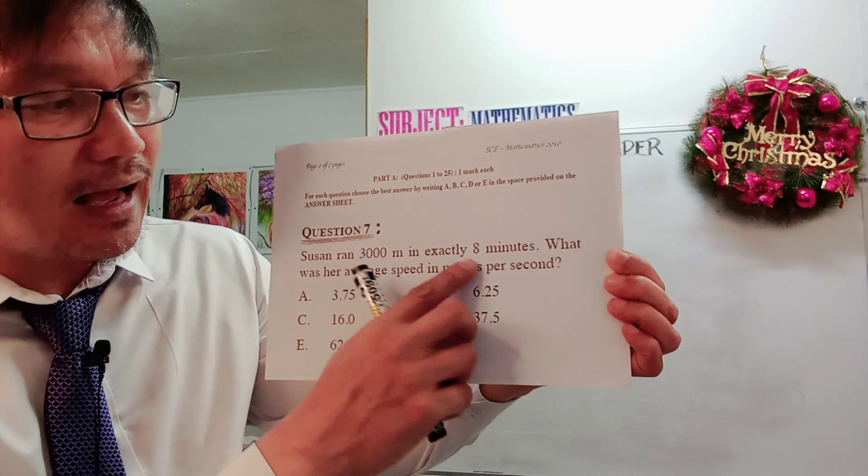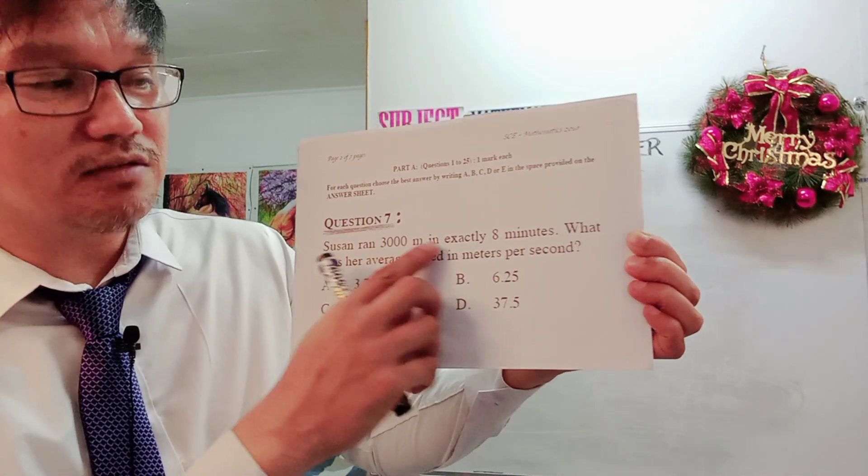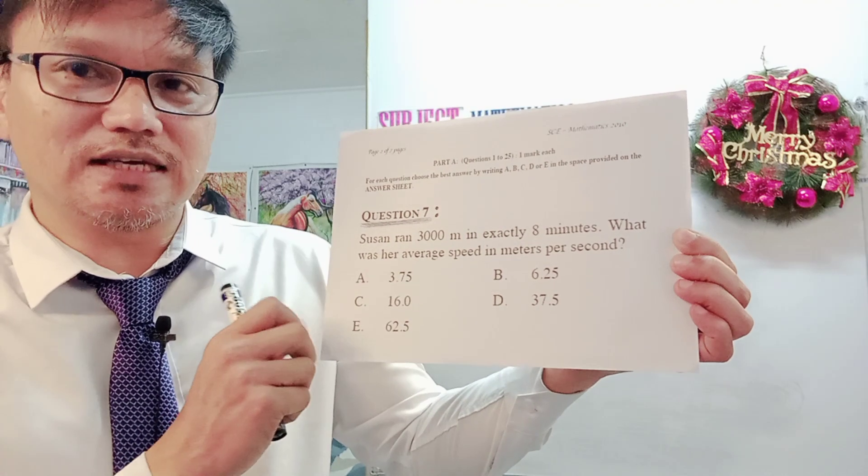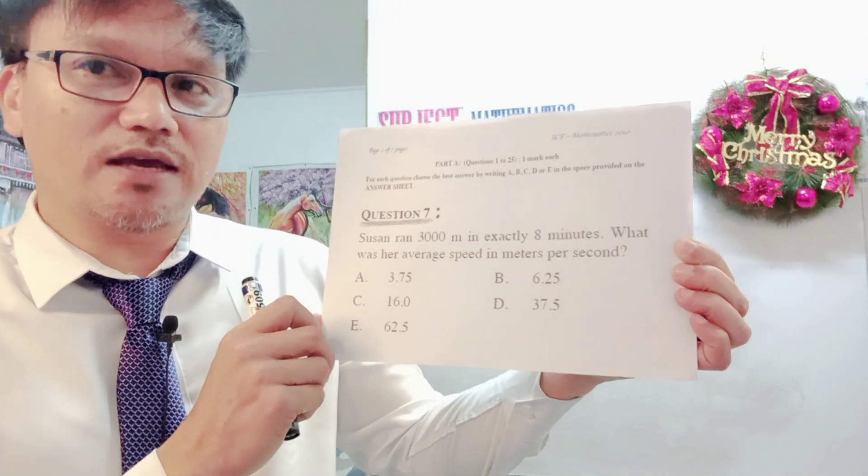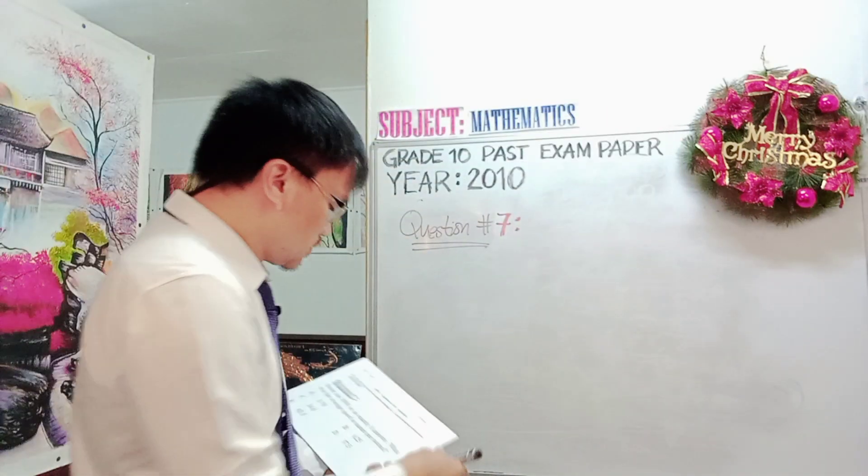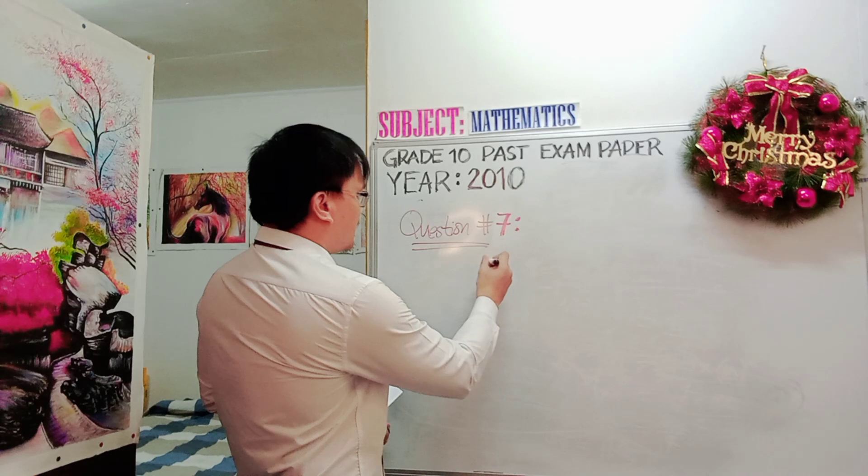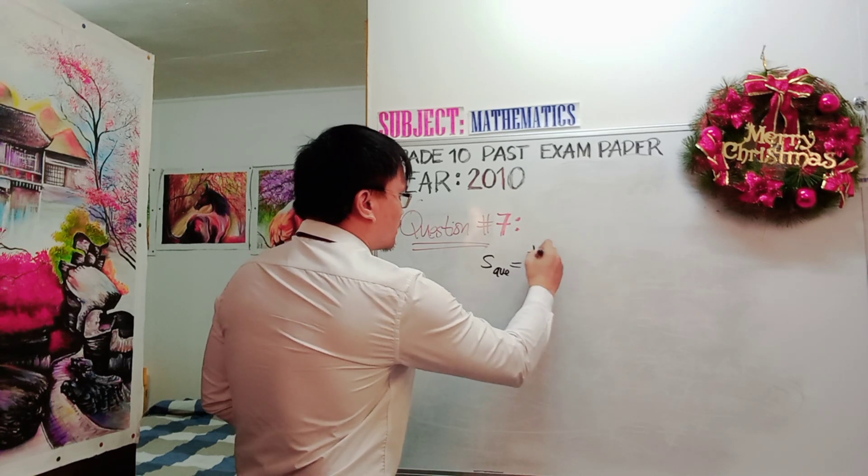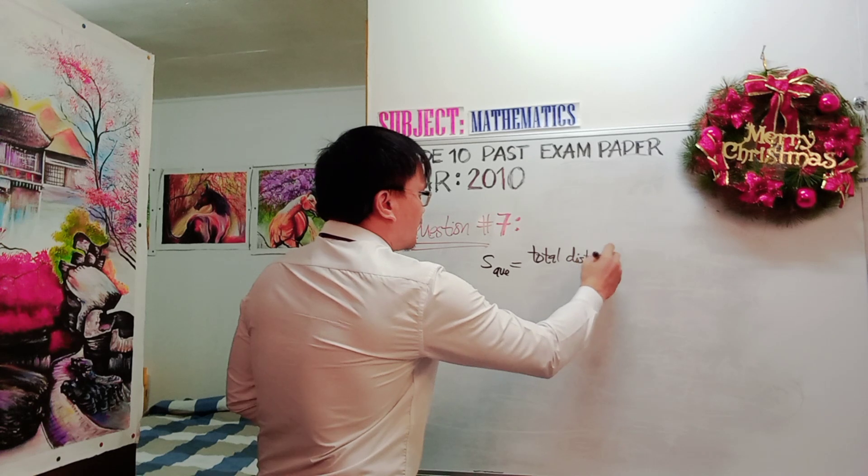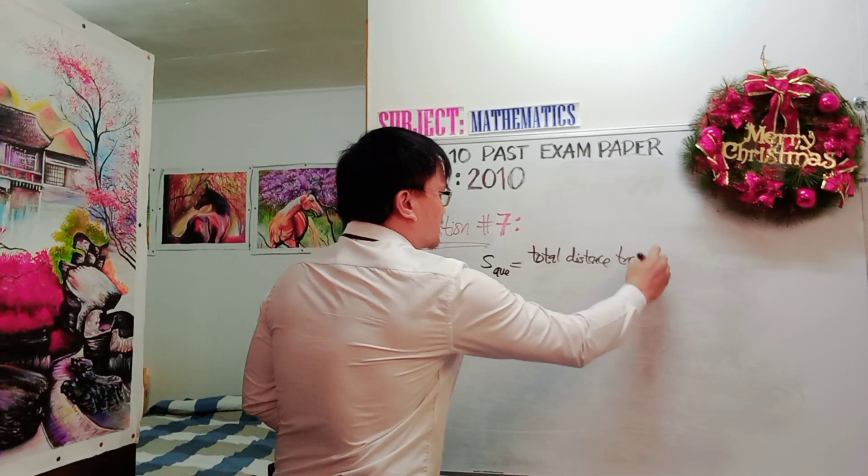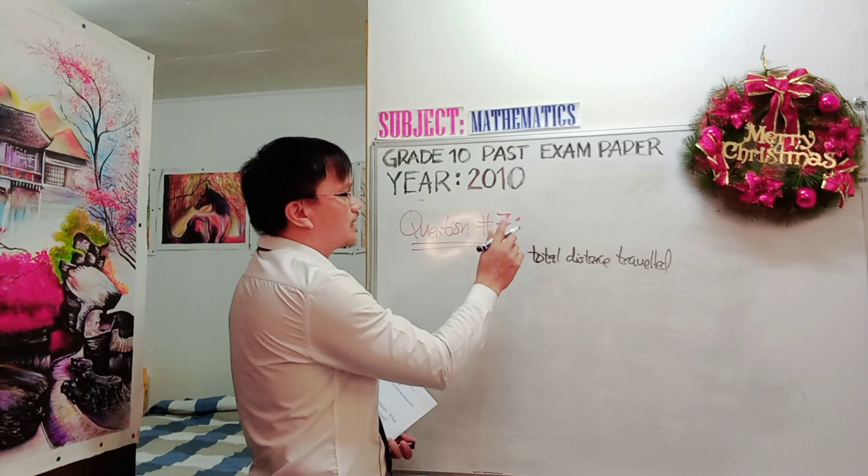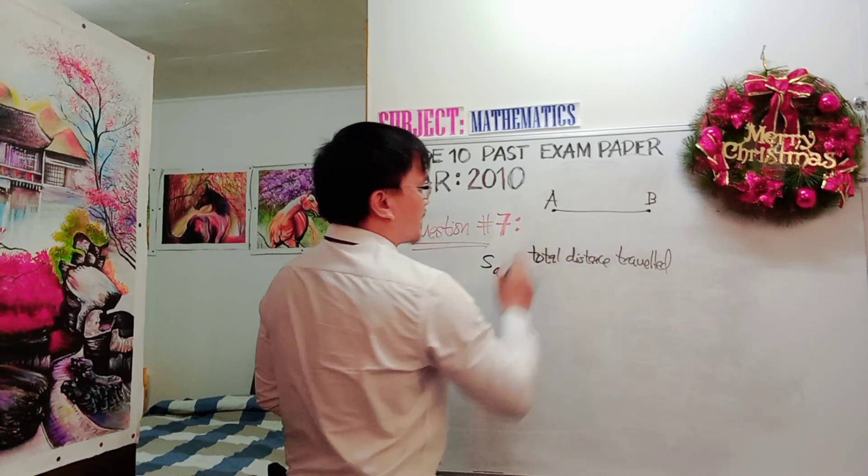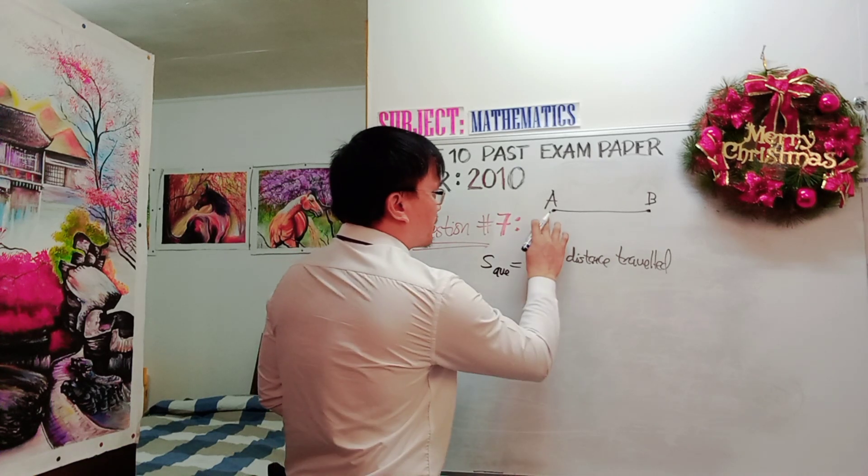However, the time for running 3,000 meters is in 8 minutes unit. So this one is just a very easy question, so you should be able to answer this one in a very short period of time. The average speed is equal to the total distance traveled. Remember that when you say average speed, you are actually running from point A to point B. So you are trying to get the total distance traveled from point A to point B.